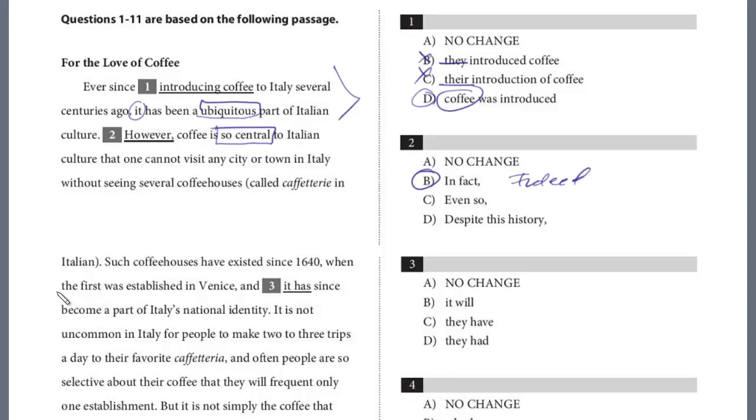Such coffee houses have existed since 1640, when the first was established in Venice, and it has since become part of Italy's national identity. So here we have such coffee houses have existed, comma, when the first was established in Venice, get in the habit of crossing out non-essential clauses, it'll help link the sentence. This is just extra information, it doesn't change the meaning. Such coffee houses have existed since 1640, and it, the subject is coffee houses, plural. So we can't have an it, that's singular, we need a plural. It's they, is it have or had? Well had is called the past perfect, it means it no longer occurs. Have means that it's still continuing today, and that's really the point that it's still so central, it's ongoing. And so it's they, to agree with coffee houses, and then we want the present perfect, have.